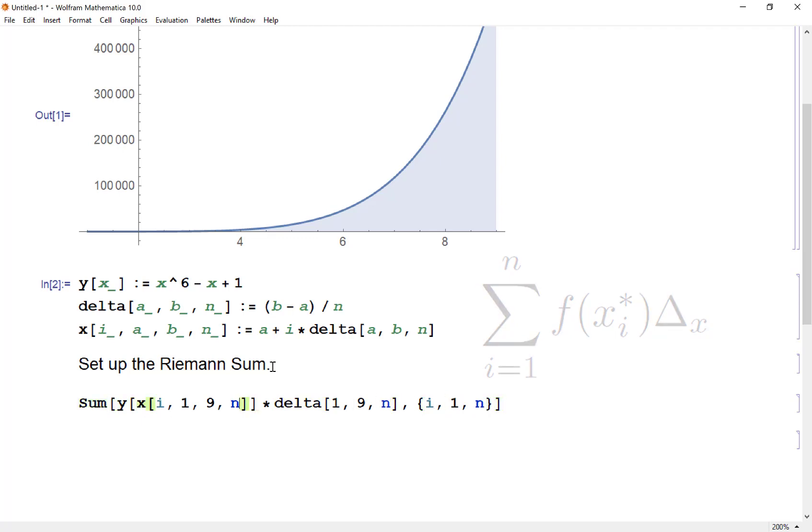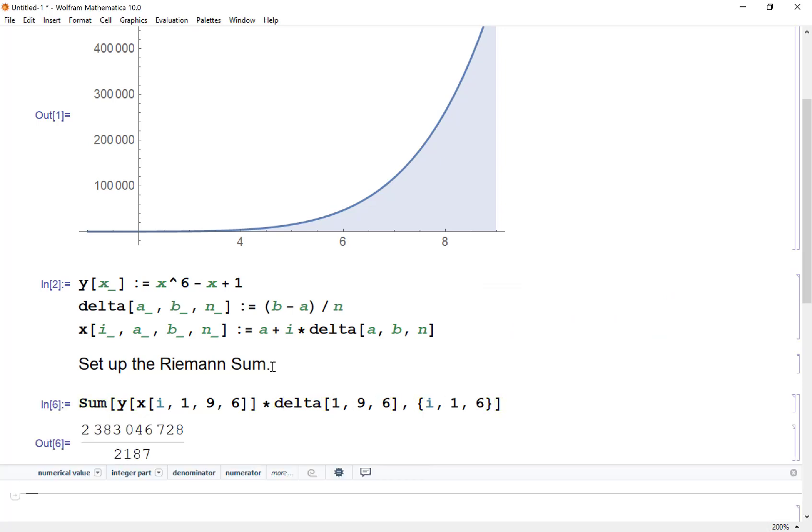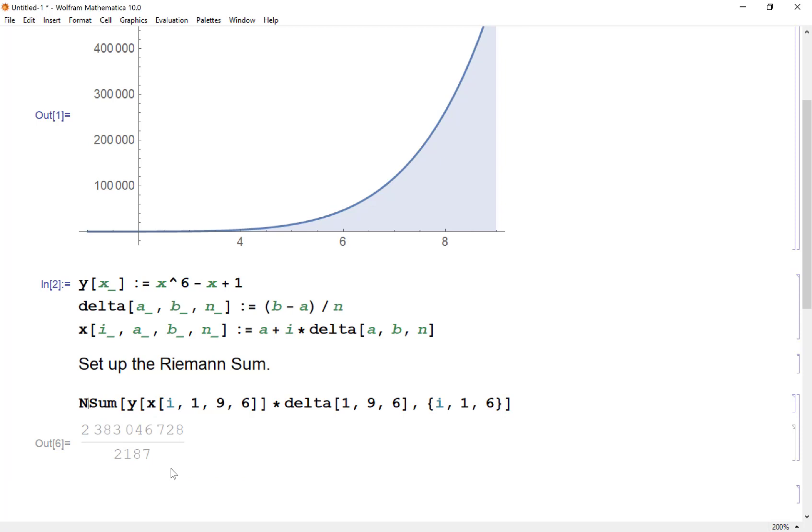So for example, if I wanted six rectangles, and I want to know the area with six, I'm just going to change all my n's here to six. And it gives me, it does not give me a decimal, it gives me a fraction. You can change that to decimal by simply making this n sum instead of sum. And there it is. And I told you it'd be very large.